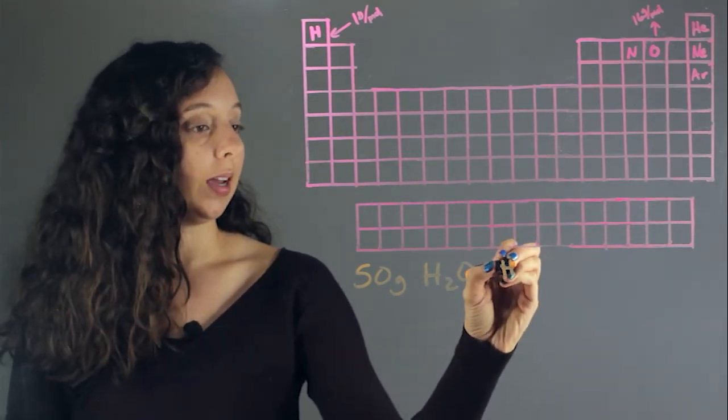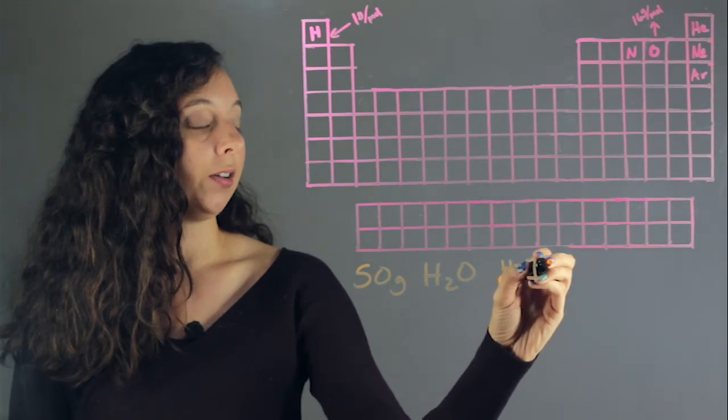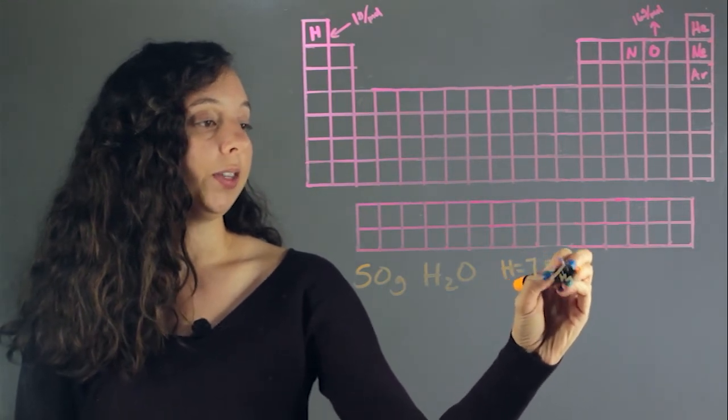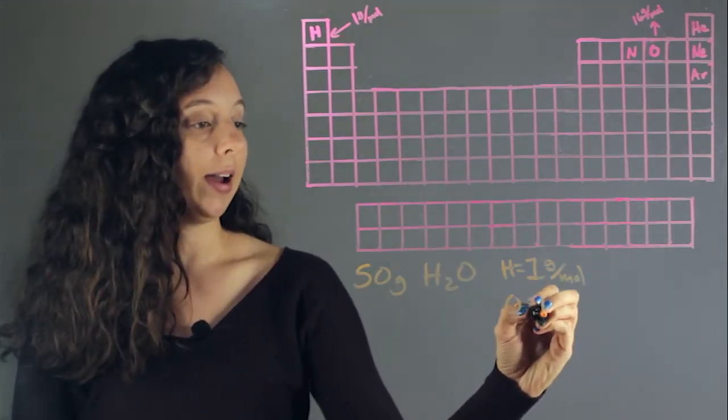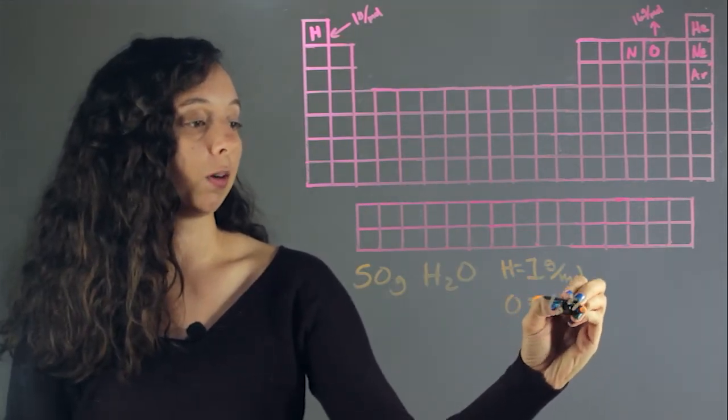Hydrogen has a molar mass of about one grams per mole. These numbers can be looked up by using the periodic table. Oxygen has the molar mass of about 16 grams per mole.